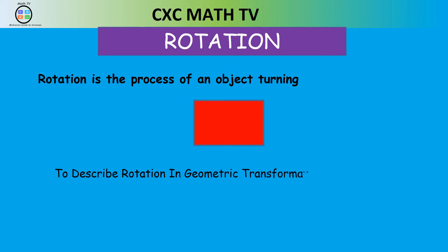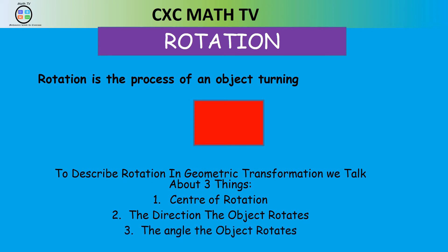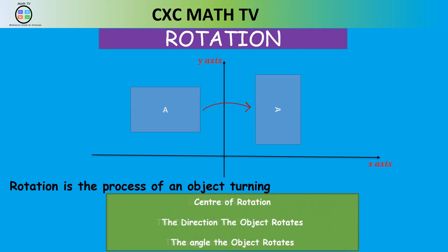To describe rotation in geometry, we need to talk about three things: the center of rotation, the direction the object rotates, and the angle of rotation. Remember these three things: center of rotation, direction, and angle of rotation.